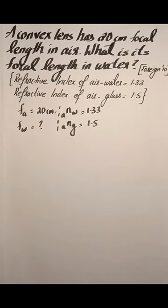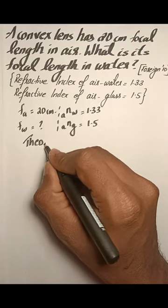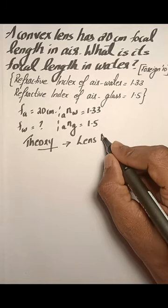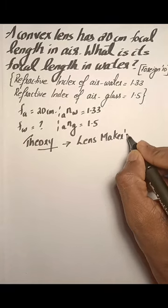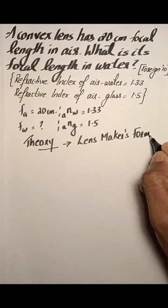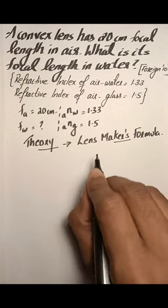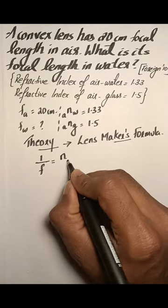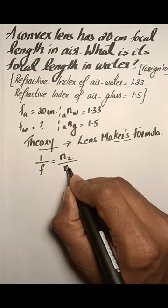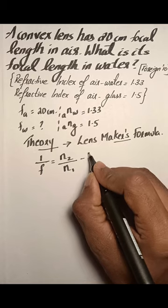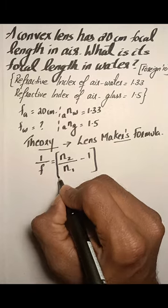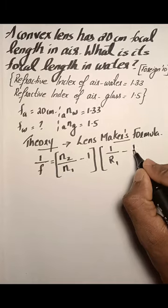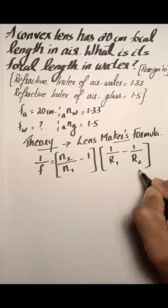First, let us discuss the theory connected to this question, which is the lens maker's formula. The lens maker's formula is: 1 over focal length equals the refractive index of the given lens divided by the refractive index of the surrounding medium, minus 1, multiplied by 1 over R1 minus 1 over R2.